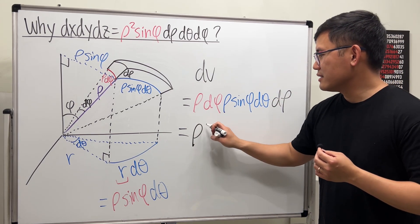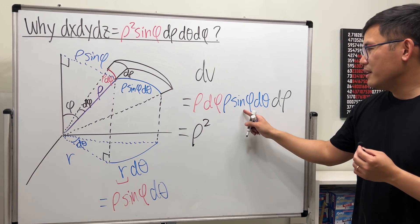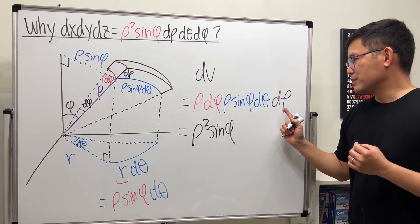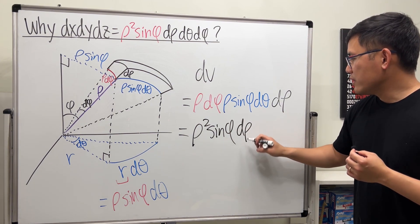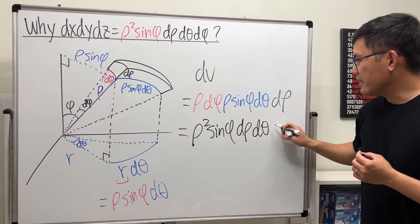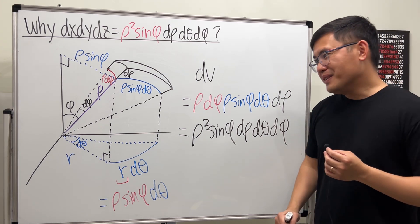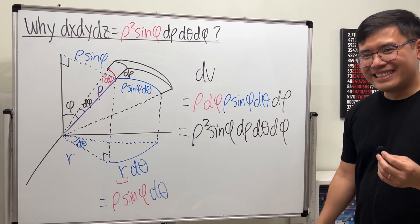Of course we can simplify this a little bit. Rho times rho, so here is the rho squared, and then here is the sine phi. Lastly, we'll put this in order: d rho, d theta, and d phi. Hopefully this is clear. That's it.